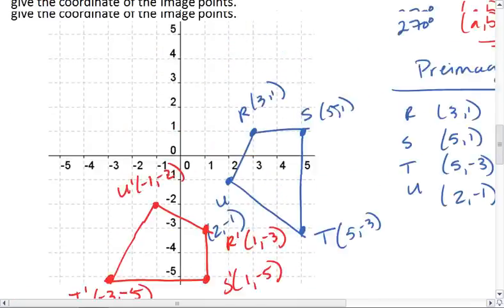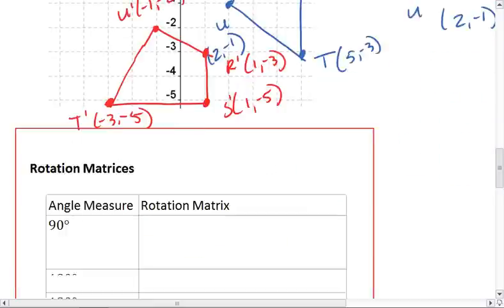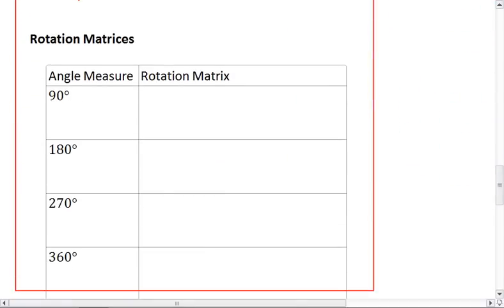Okay, so next step. Just like we saw with reflections, if we have coordinate rules, we can also have a rotation matrix, or matrix rules.